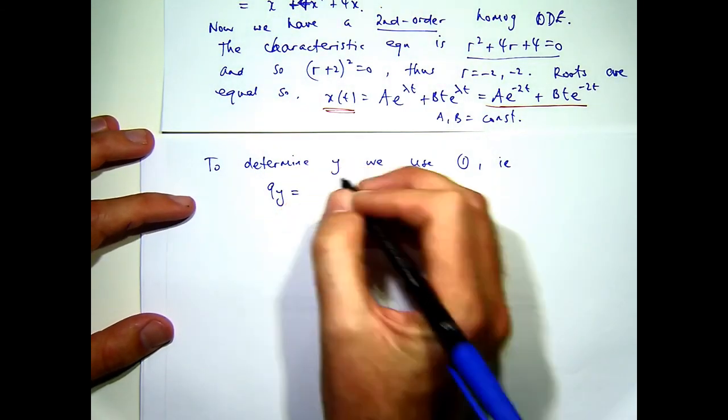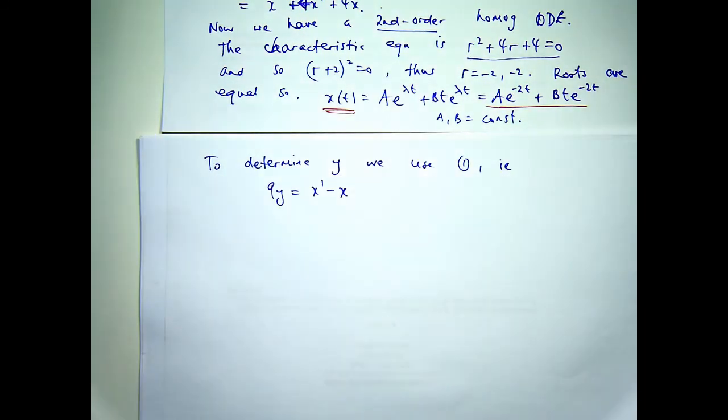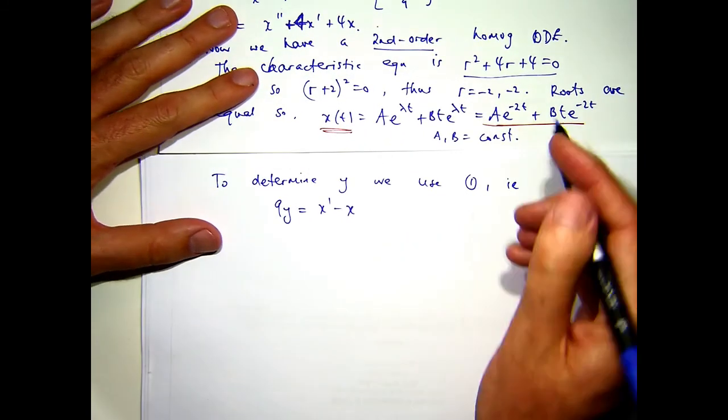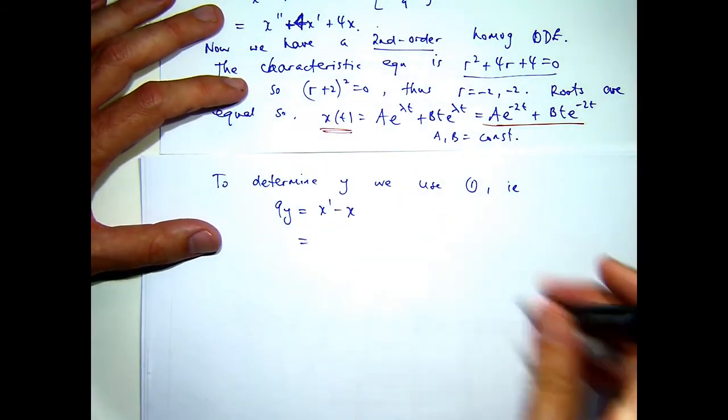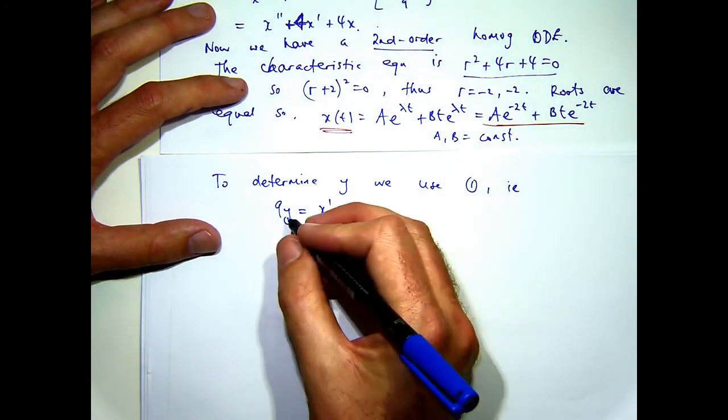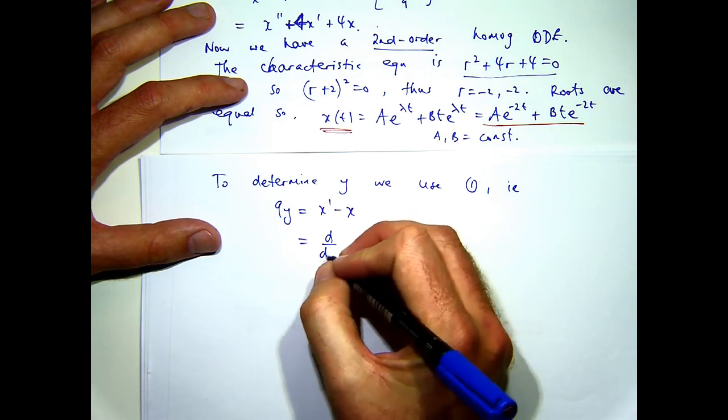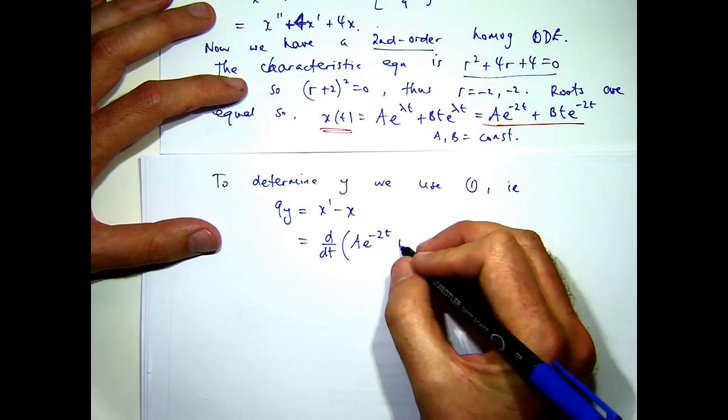So this is just a sort of rearranged version of 1. And I've got 9y out on the left-hand side. I could have y, but I'm just going to keep it as 9y for now. So using my general solution for x on the previous page, what I can do is differentiate this and take the original function away from itself, and then I'll get an expression for 9y after I rearrange.